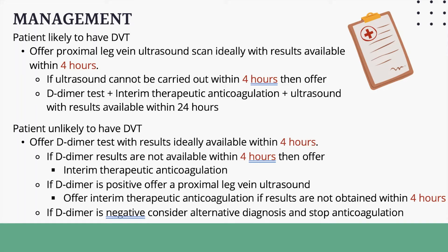For patients unlikely to have DVT, offer a D-dimer test with results ideally available within 4 hours. If D-dimer results are not available within 4 hours, offer therapeutic anticoagulation. If D-dimer is positive, proceed to a proximal leg vein ultrasound and offer therapeutic anticoagulation if results are not obtained within 4 hours. If D-dimer is negative, consider an alternative diagnosis and stop any anticoagulation that may have been started.